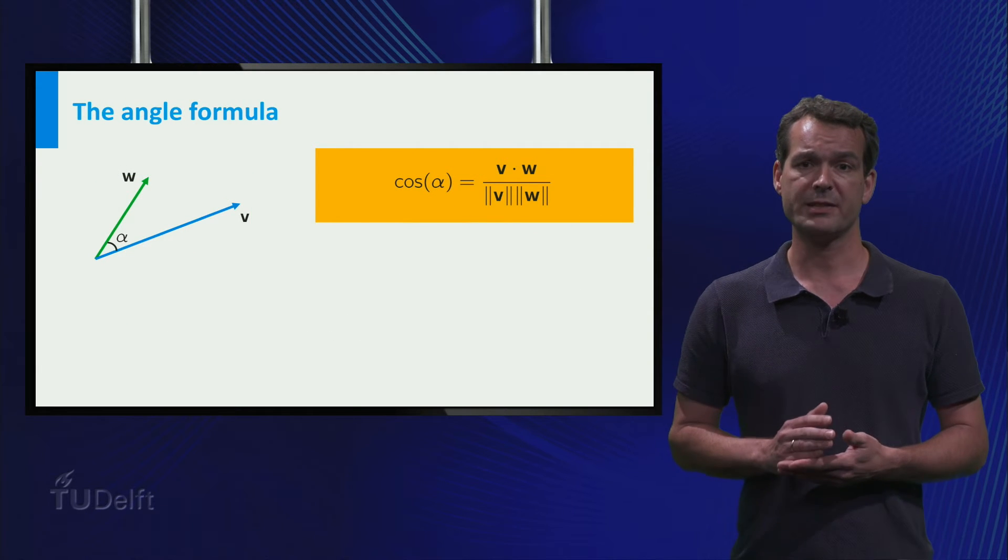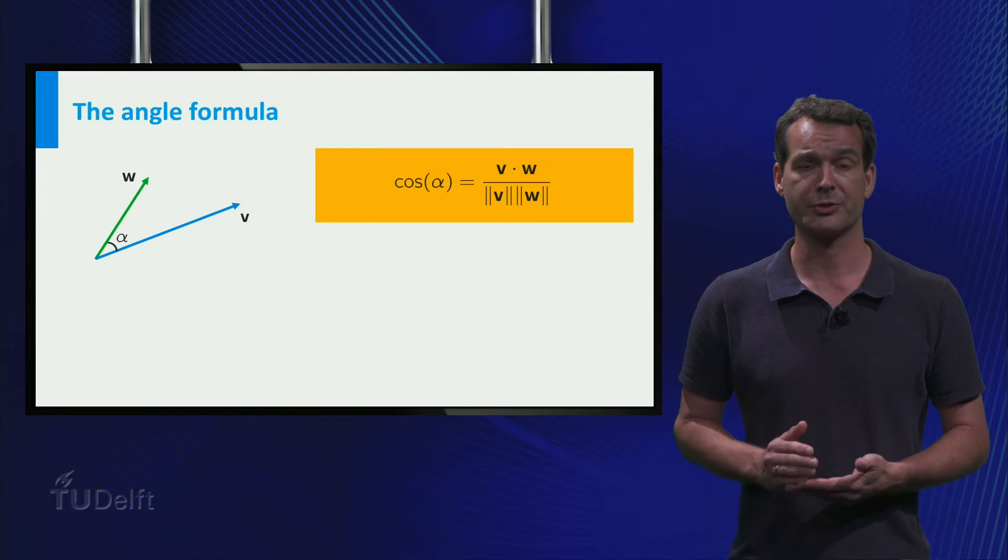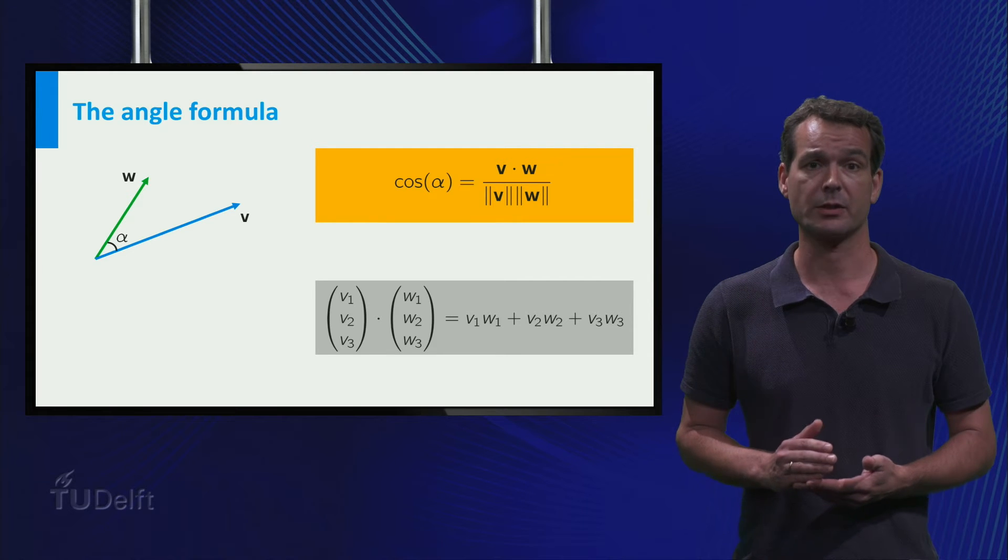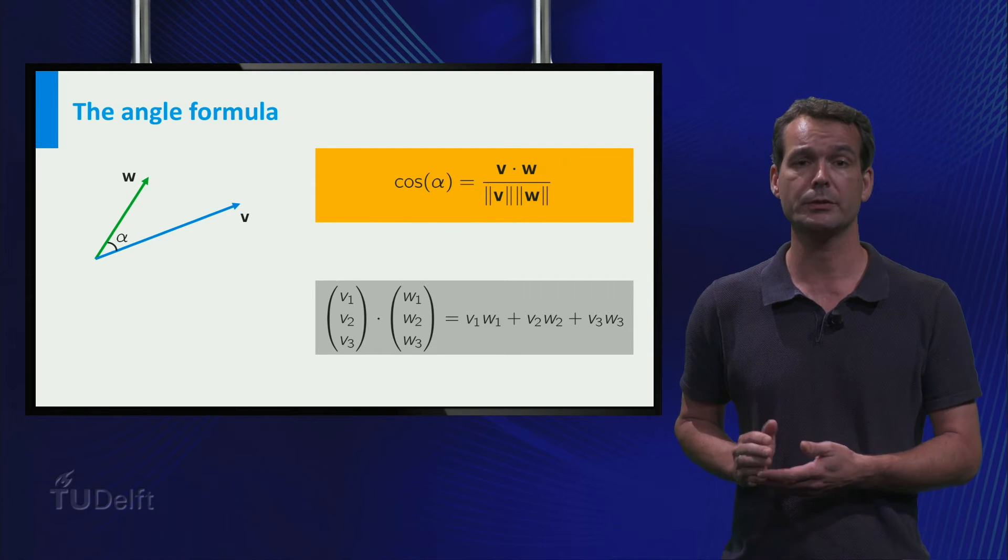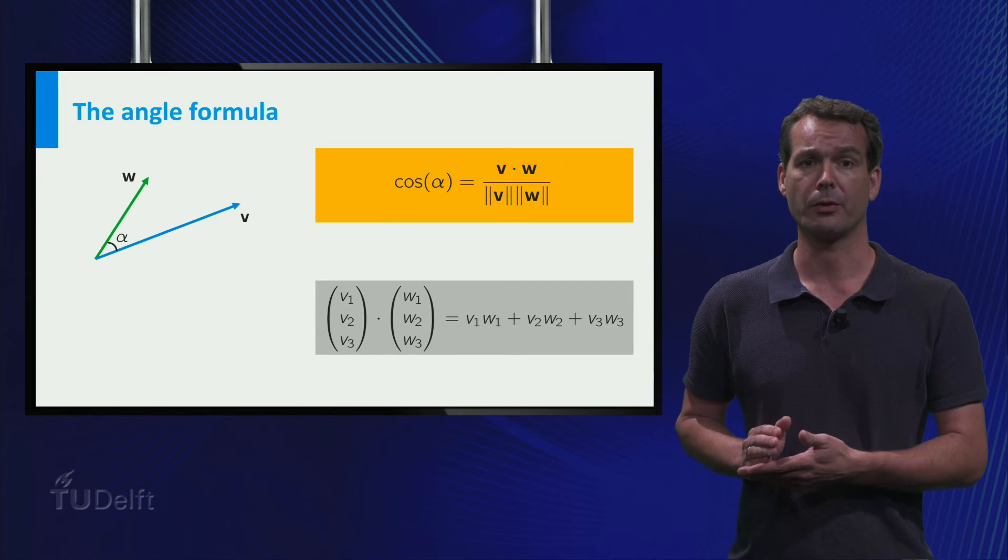What may be a bit surprising is that the angle formula that you have seen for two-dimensional vectors also works in three dimensions. In this case, the dot product of two vectors, v and w, is v1 w1 plus v2 w2 plus v3 w3.